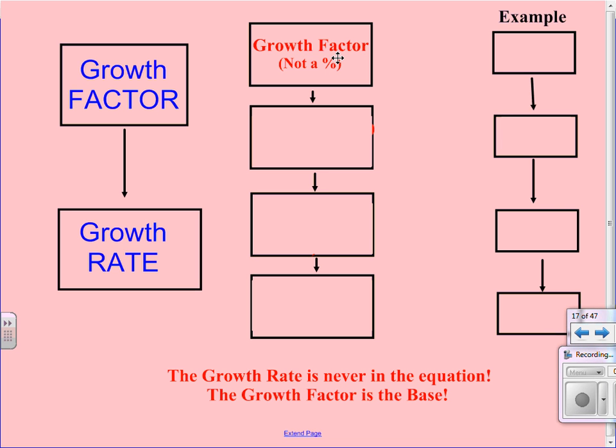The growth factor is not a percent, and the growth rate is always written as the percent. So we're going to start off with an example here of a growth factor of 1 and 34 hundredths. Now keep in mind what this means. This means that we are taking the whole, or 100%, plus another 34%. And so the first thing we need to do to convert a growth factor to a growth rate is to convert this growth factor into a percent.